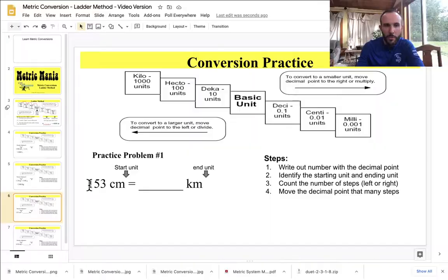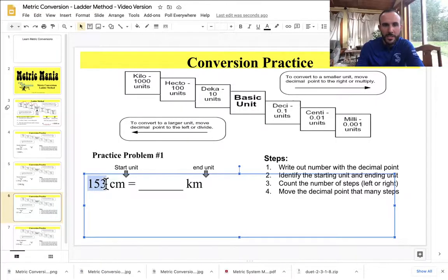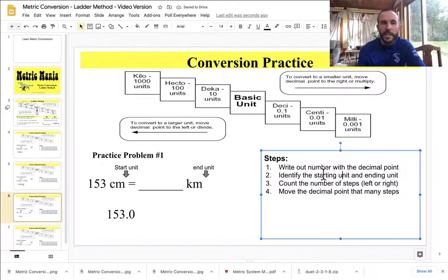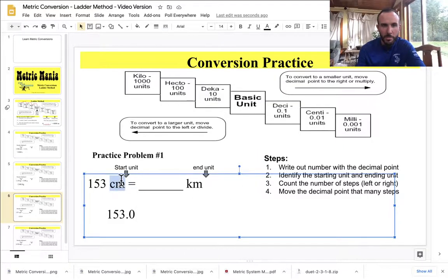So I'm going to convert from 153 centimeters. And I'm going to go to kilometers. So step one, I'm going to write out with the decimal point. So I'm going to write 153.0. Now I'm going to identify the starting unit and the ending unit. So I'm going from centimeters to kilometers. So I find it here. And I'm going to count the number of steps. I'm going centi. 1, 2, 3, 4, 5 jumps to kilo. And I jumped to the left.